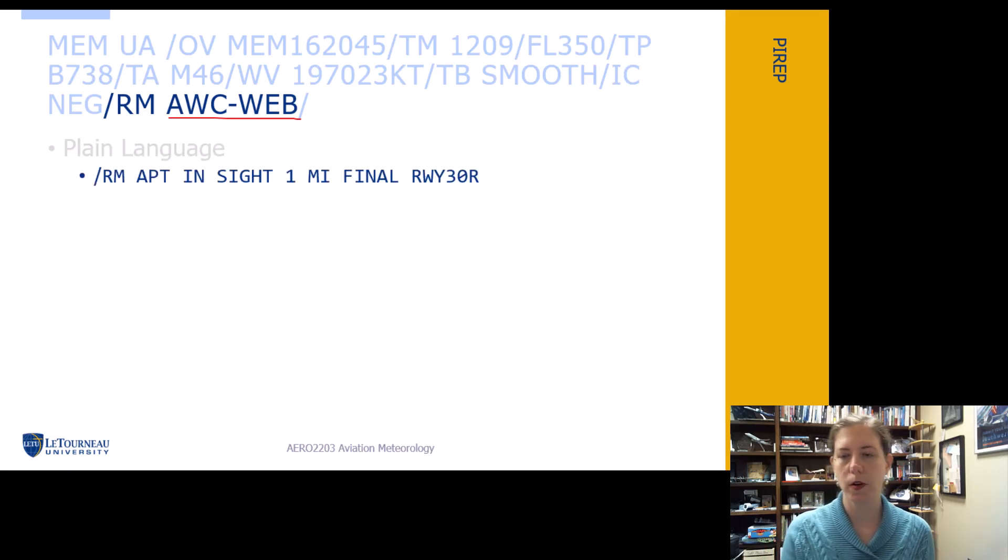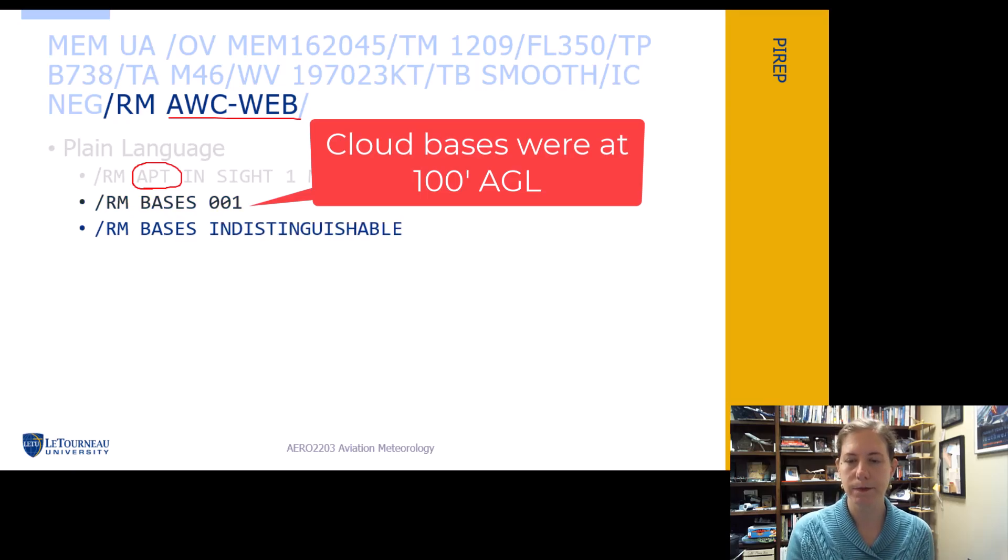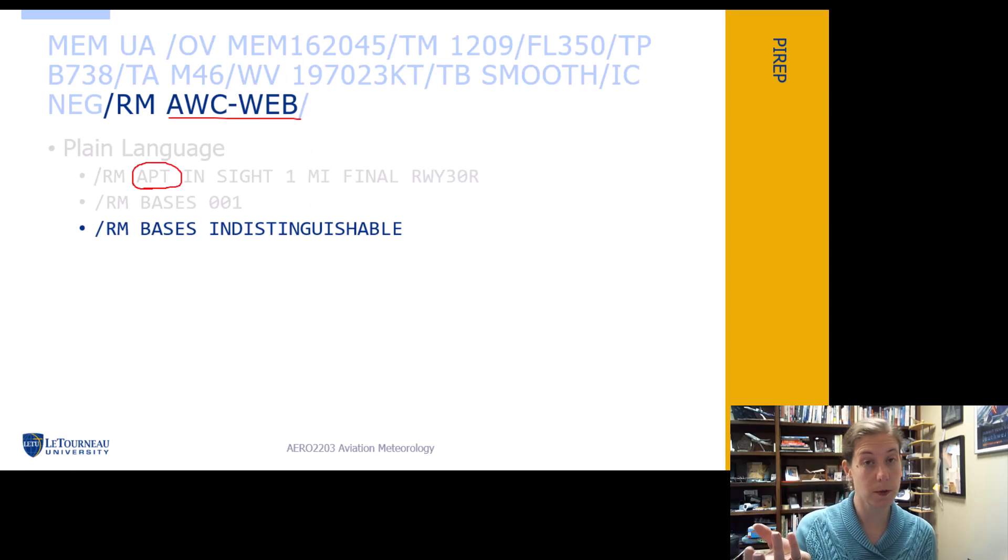Here's an example. So airport in sight, one mile final, runway 30 right. APT, that was not plain language, I had to figure that out, but it's usually pretty self-explanatory. Just think about what they might be saying. Here's one: bases are at 100 feet. And would that be MSL or AGL? I should say MSL. Pilot report heights are given in MSL.